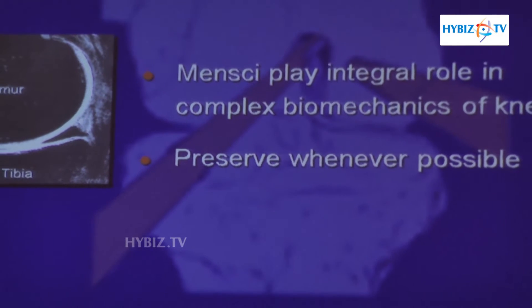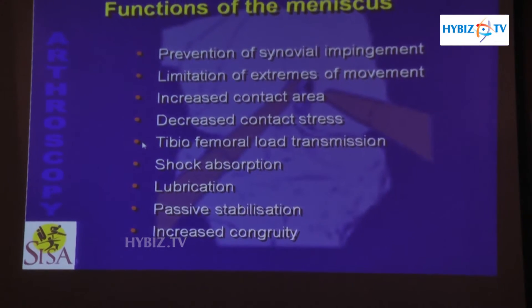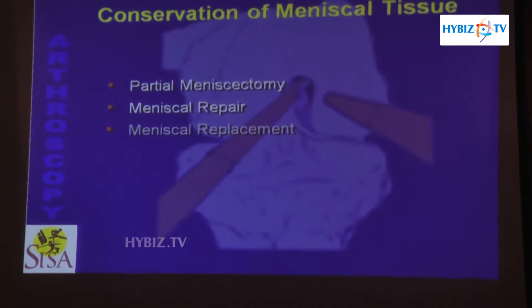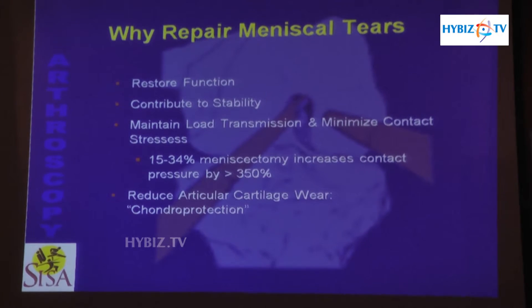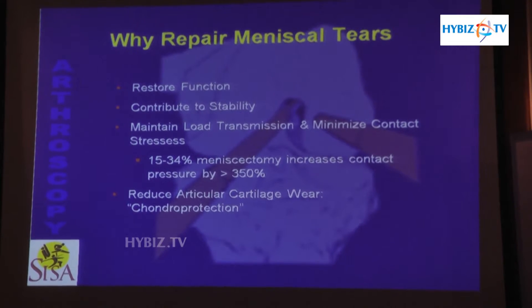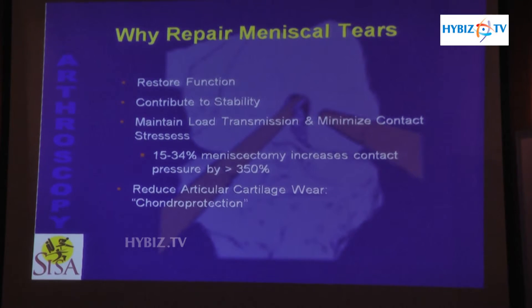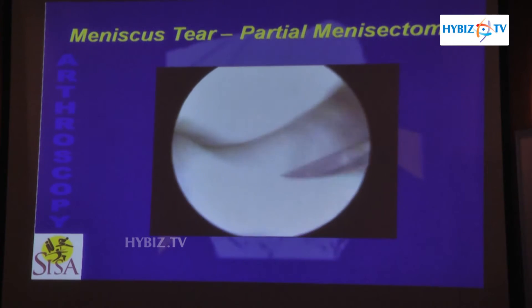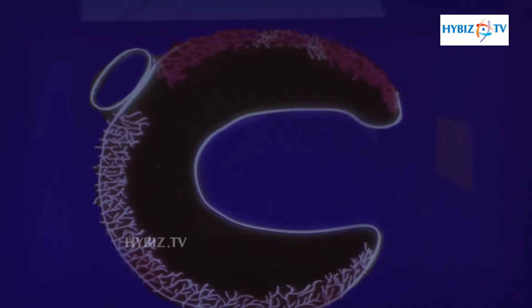Coming to the second topic — meniscal cushion. As I was talking earlier, between two bones it acts like a cushion. These are the various functions. Earlier we used to remove the meniscus — meniscectomy — but now we try to preserve the meniscus, because if you remove the meniscus there will be more chance of osteoarthritis, because the two bones are going to touch. Around 15 years ago, surgeons used to routinely remove the meniscus. If you remove the meniscus, for the time being he may be normal, but after 10 years he will go for arthritis.